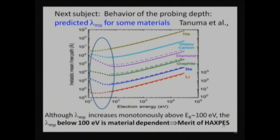The next subject is the behavior of probing depths. Around 100 eV, all materials show the minimum probing depth or mean free path of photoelectrons. Therefore, in order to study the bulk electronic structures of SCES, we decided to move from soft X-ray around 2000 to hard X-ray up to 10 keV from 2004. This continuous increase of mean free path is the merit of HAXPES. At low photon and kinetic energies, the mean free path depends on the individual materials.